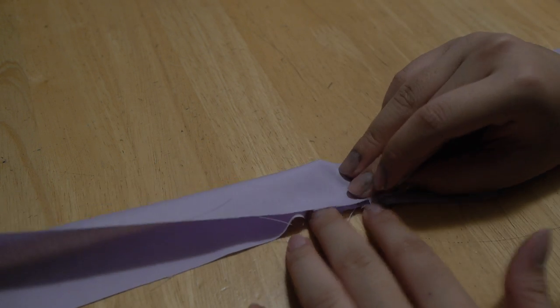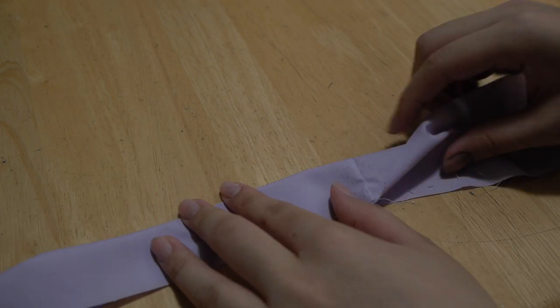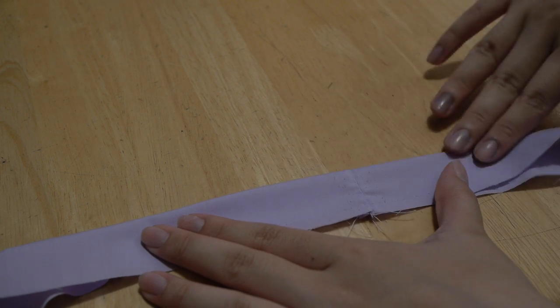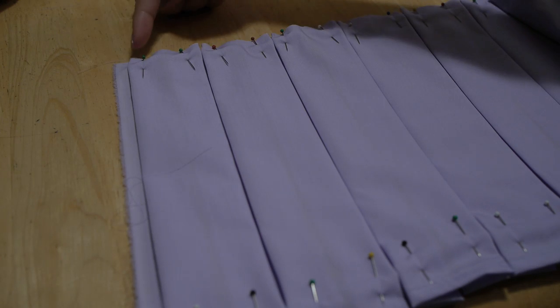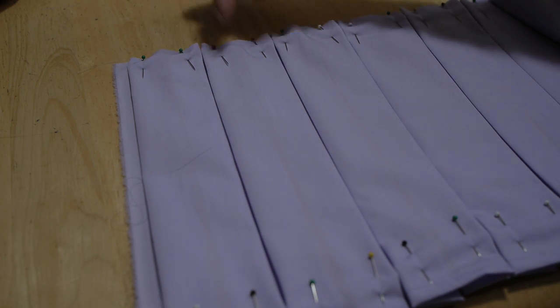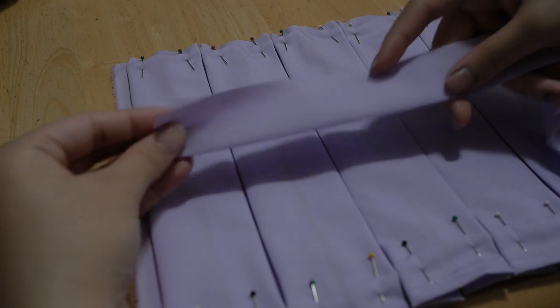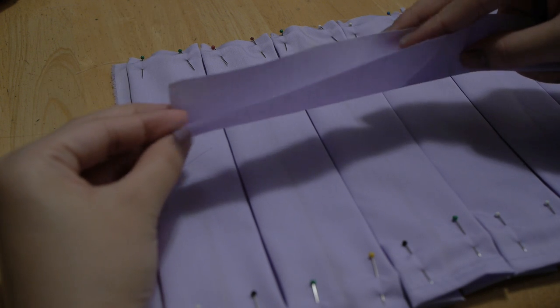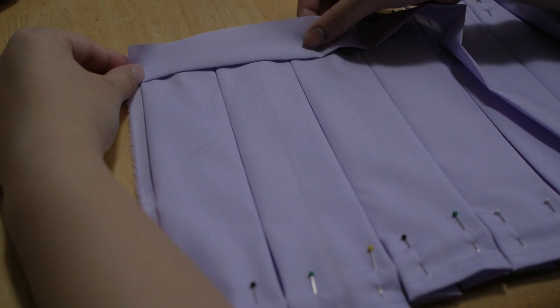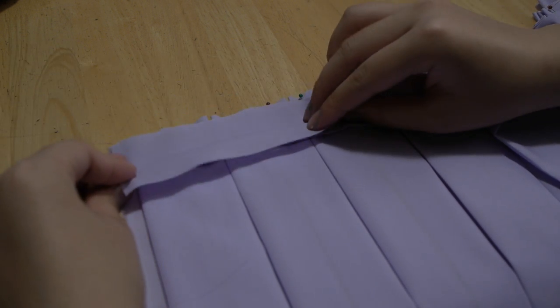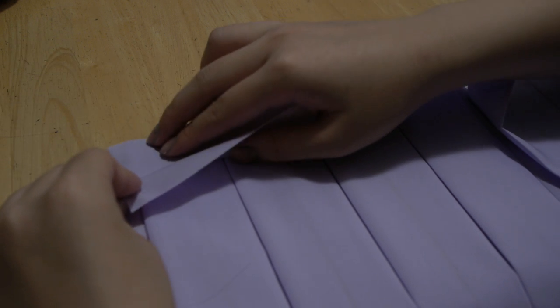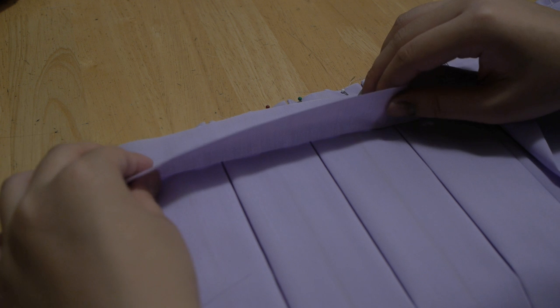You'll fold your waistband in half and iron it down. Take your pleated fabric right side up and align your waistband along the top edge of your skirt. Open up your waistband and sew up that one side. Do not sew both sides folded together.